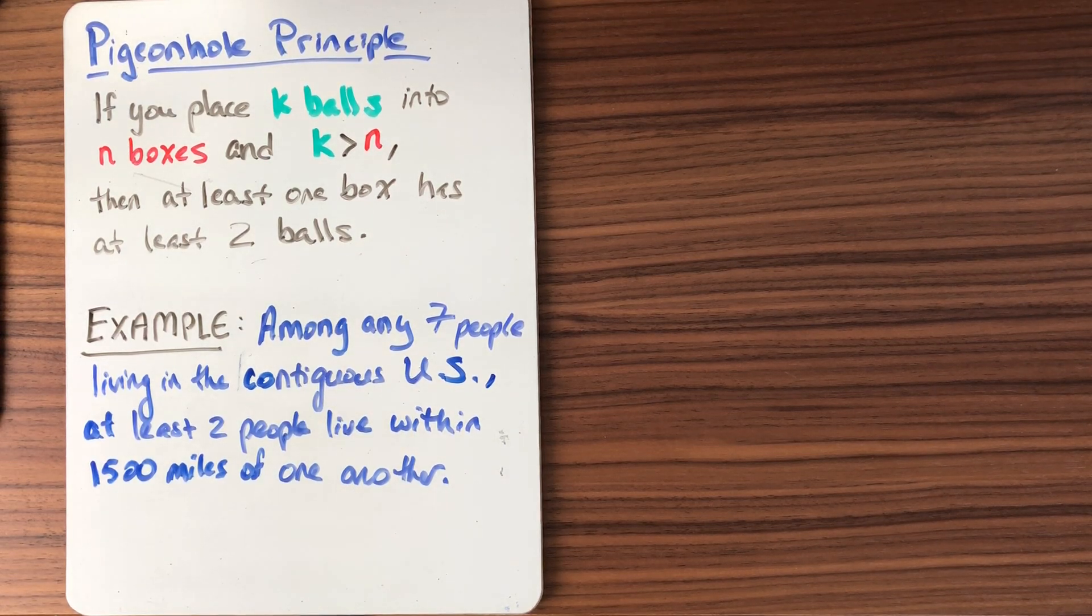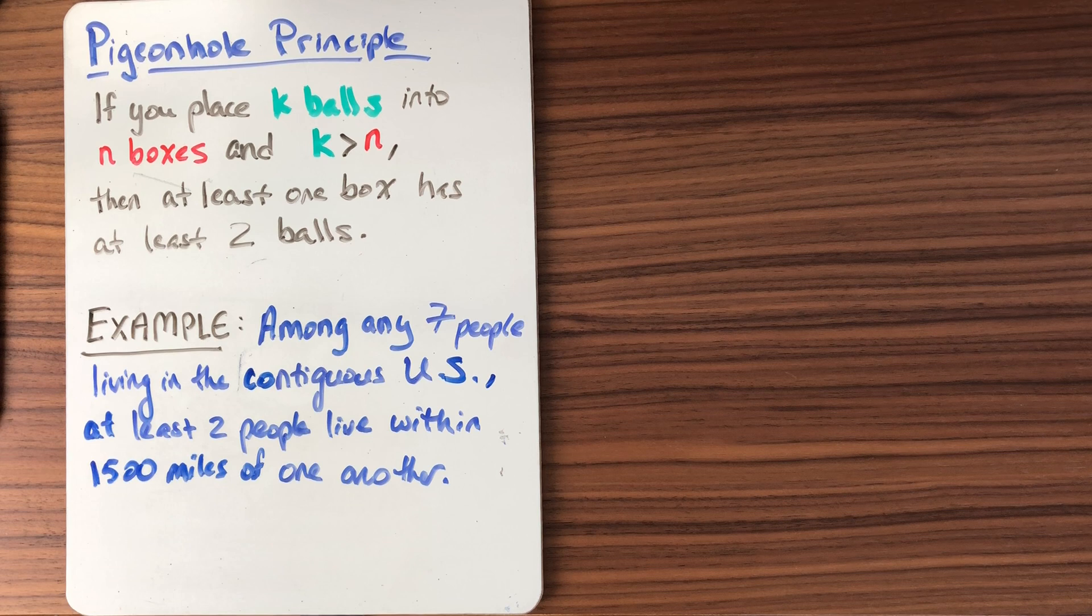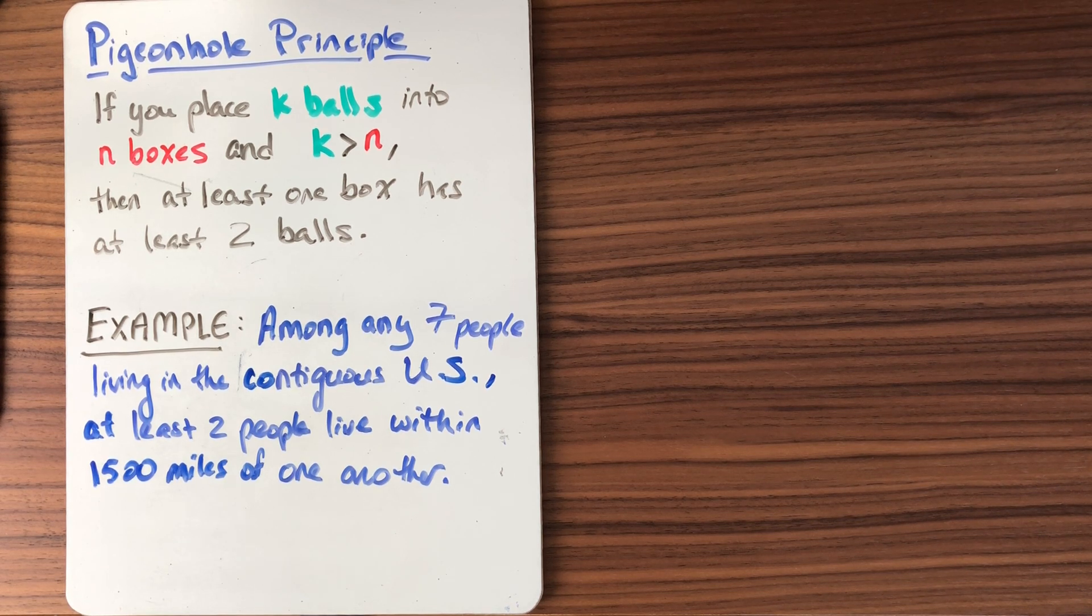Continuing our discussion of the pigeonhole principle, let's review what the principle says. It says that if you place more balls into fewer boxes, then at least one box has at least two balls. That is the statement.